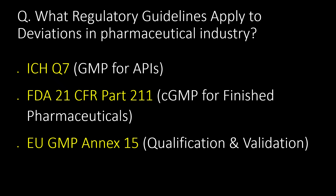What regulatory guidelines apply to deviations in the pharmaceutical industry? ICH Q7, FDA 21 CFR Part 211, and EU GMP Annex 15 are the guidelines most commonly referred to for deviations in the pharmaceutical industry.